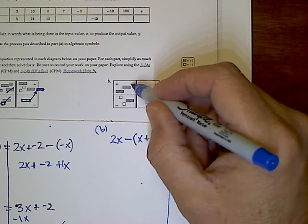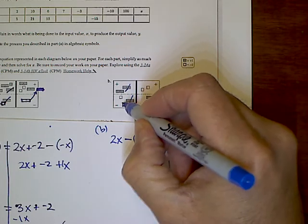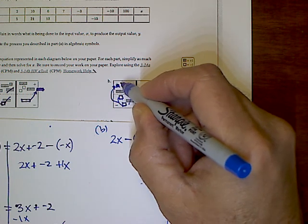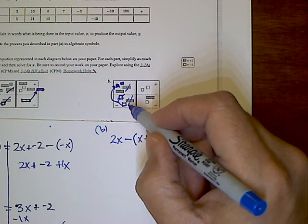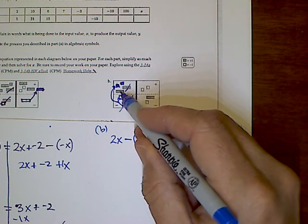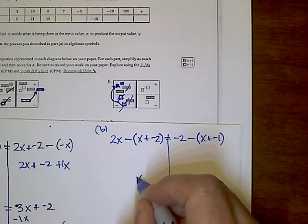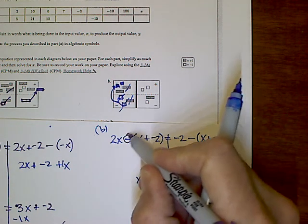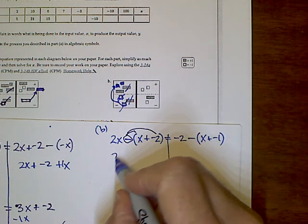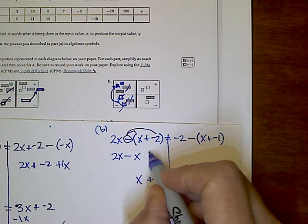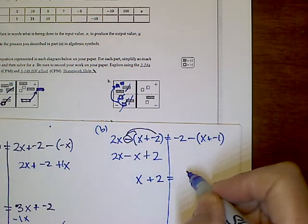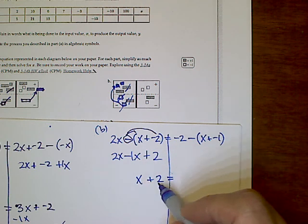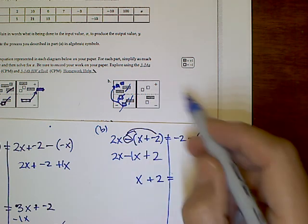On the left side of the mat, I have a positive x both top and bottom, so those cancel. Then I bring the negative one tiles from the bottom up to the top, where they become positive ones. So the left side simplifies to x plus two. Algebraically: distributing the minus gives 2x minus x, and minus a negative two becomes plus two, so 2x minus x plus 2 equals x plus 2.